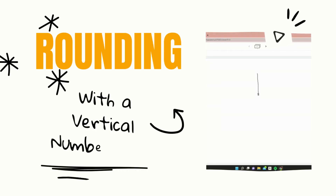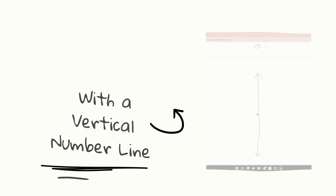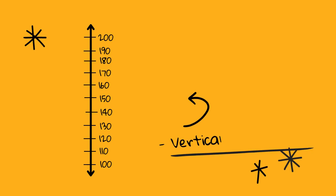Welcome! Today we will be rounding with a vertical number line. This is a vertical number line. It starts with 100 at the bottom and goes all the way up to 200. Each tick mark is 10 points away from the last one.